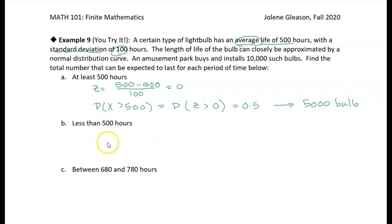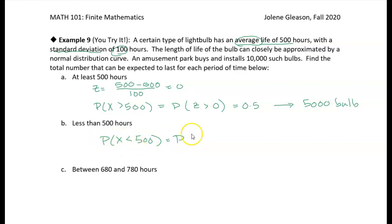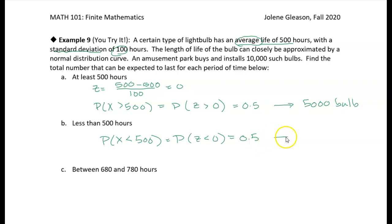This next one is similar. We want to know the probability that light bulbs last less than 500 hours. Since 500 hours is the mean, the z-score is zero. The probability that a bulb lasts less than 500 hours equals the probability that z is less than zero, which is 0.5 — so that's 5,000 bulbs.